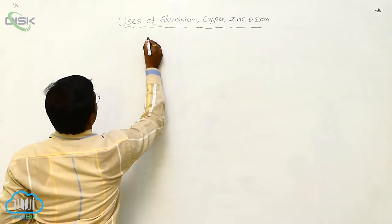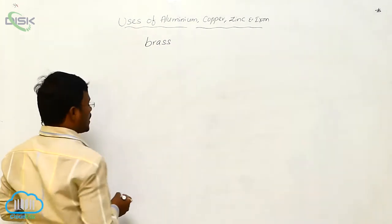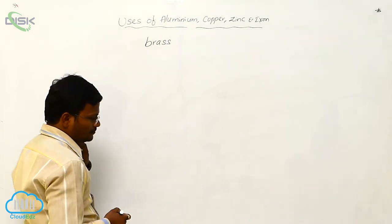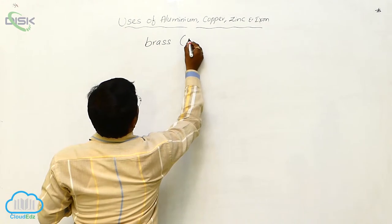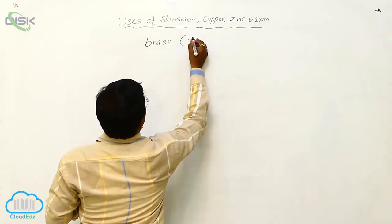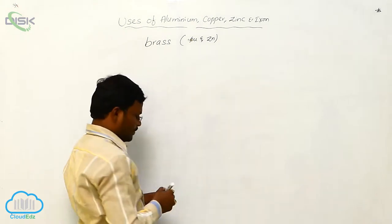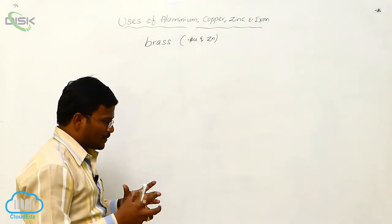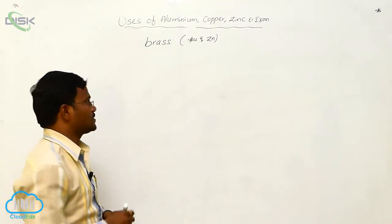Let us have some examples for alloys resulting from Copper or Brass. It consists of Copper and Zinc. That means, when addition of Copper and Zinc takes place together, then the resulting alloy is called as Brass.